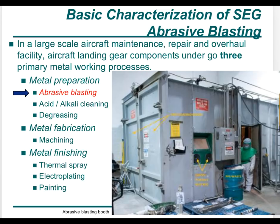As we begin to develop our sampling strategy, we identify our major processes. For this example there are three: metal preparation, metal fabrication, and metal finishing. This is a large-scale aircraft maintenance, repair, and overhaul facility working primarily with landing gear components. Within each process there are sub-processes: abrasive blasting, acid alkaline cleaning, and degreasing under metal preparation; machining under metal fabrication; and thermal spray, electroplating, and painting under metal finishing.